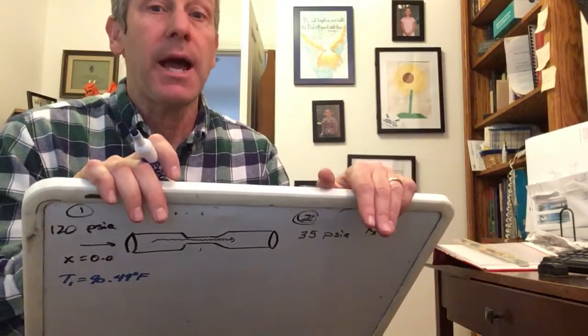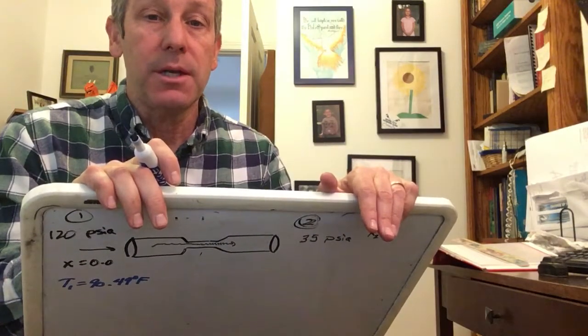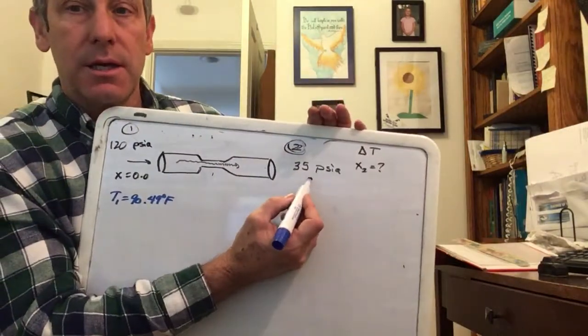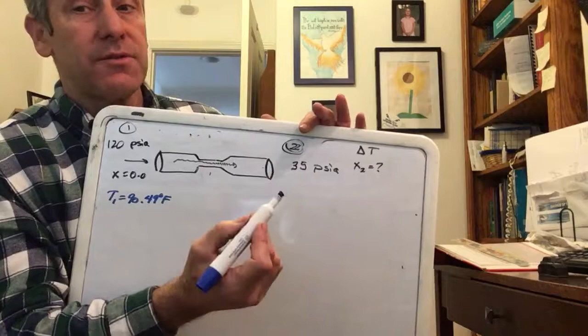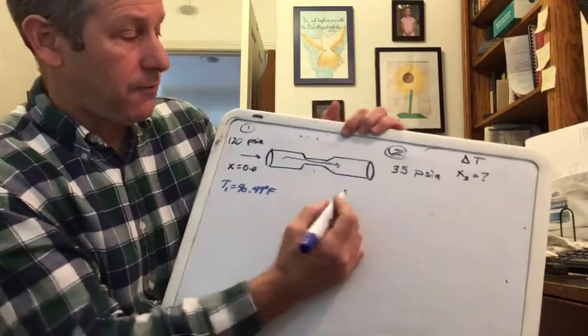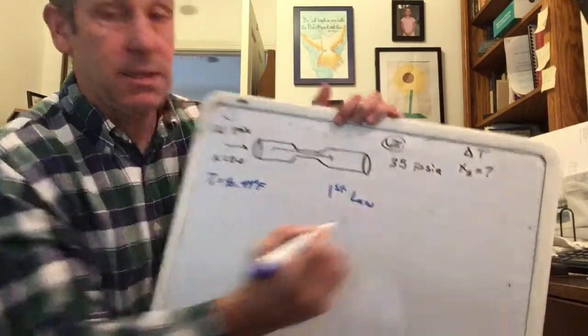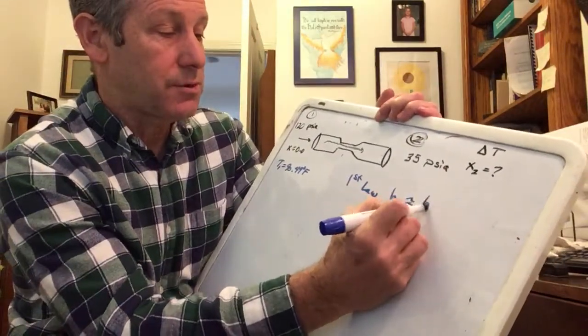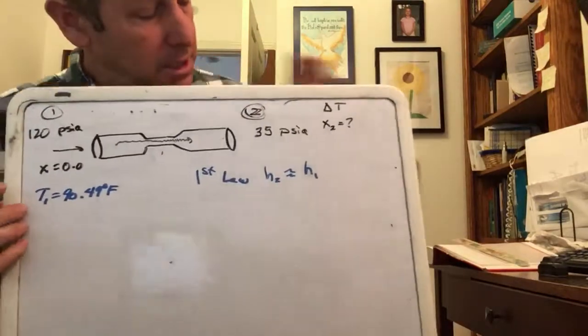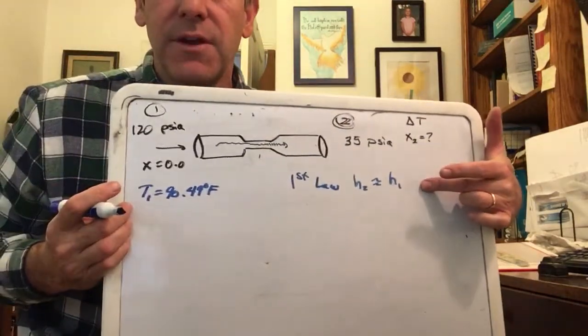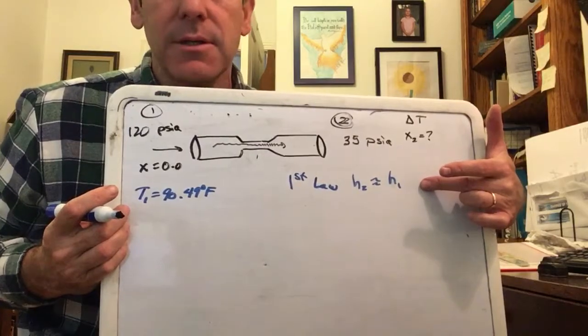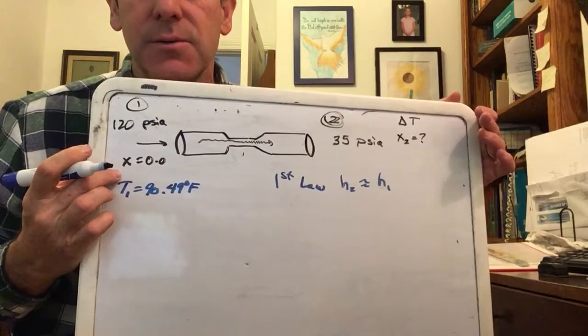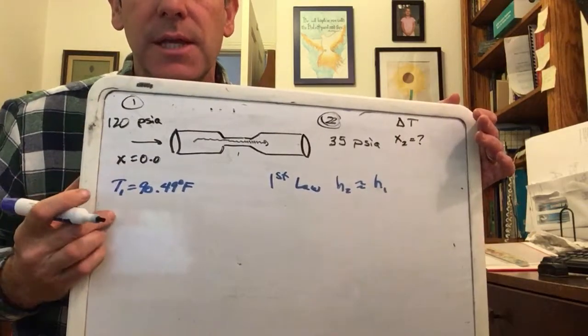We're going to use the tables at two. Remember that in almost all cases if we can find two properties for a fluid, we can go to the tables and find out other properties we need. Is there another property we know at this outlet? Well, that comes from the first law. The first law for a steady state throttling valve is just basically that h2 is approximately equal to h1. We can get h2 if we knew h1, and do we have enough information for getting h1? Absolutely. We know where it is on the table: 120 psi, x equals 0.0.